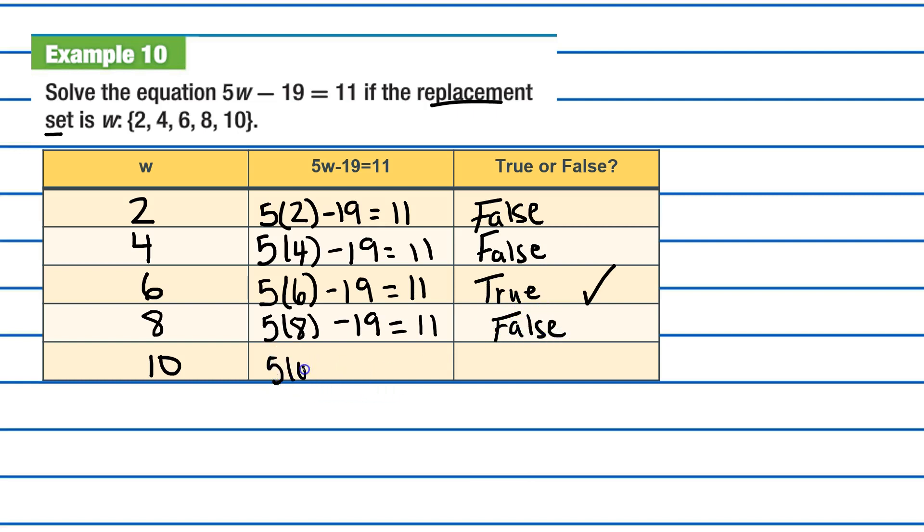5 times 10 minus 19, does that equal 11? So, 5 times 10, 50 minus 19, does that equal 11? It does not. So, we know that's false.